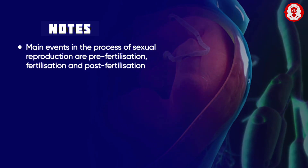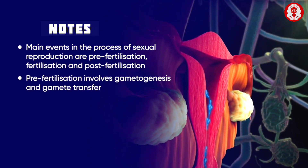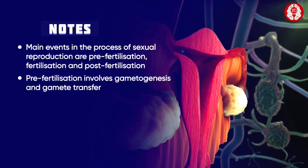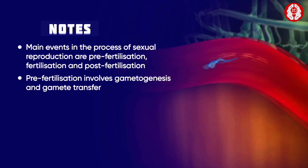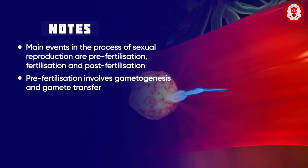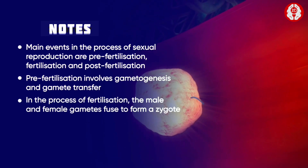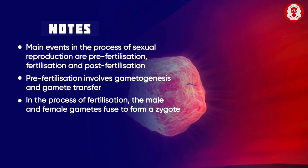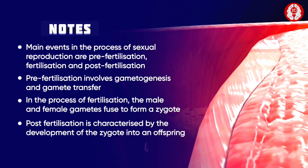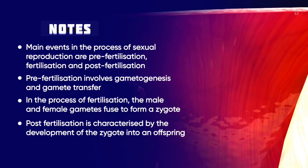The main events in the process of sexual reproduction are pre-fertilization, fertilization, and post-fertilization events. Pre-fertilization involves gametogenesis, that is the formation of gametes in the sex organs, and the gamete transfer, where the male gametes are transferred through different modes to reach the female gametes. In fertilization, the male and the female gametes fuse to form a zygote. Post-fertilization is characterized by the development of the zygote into the full-fledged offspring.